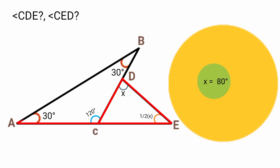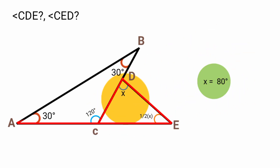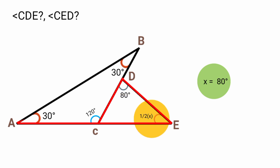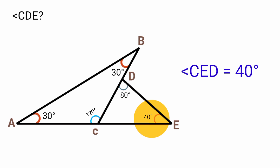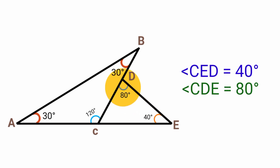Substituting x equals 80: angle CDE equals 80 degrees. For angle CED, one-half x equals one-half of 80, which equals 40 degrees. So angle CED is 40 degrees and angle CDE is 80 degrees.